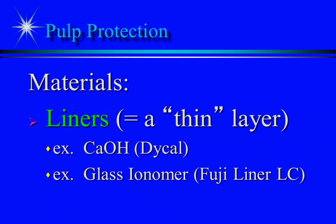Liners and bases are often the same material. Liners are commonly used in deep preparations. One example is Fuji Liner LC, which is a glass ionomer material. Another is Dical, which is a calcium hydroxide material. Liners are applied in one or two coats and applied only on the dentin.